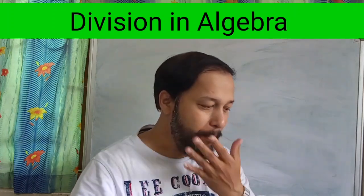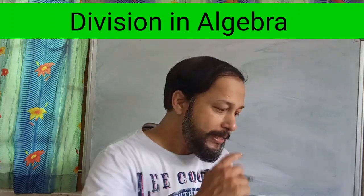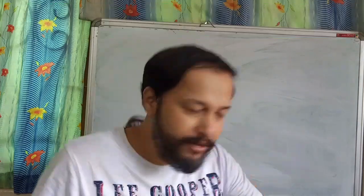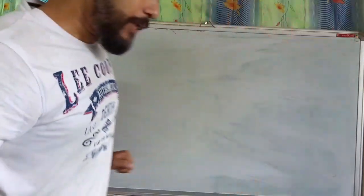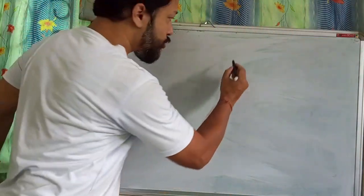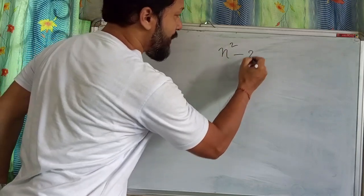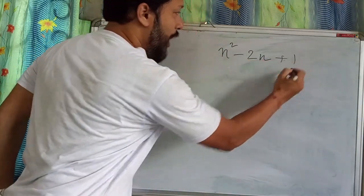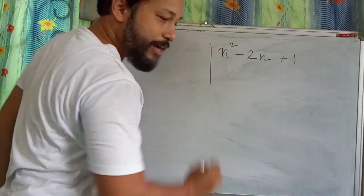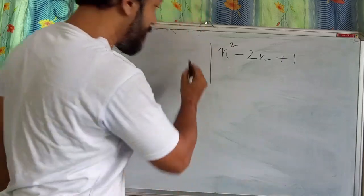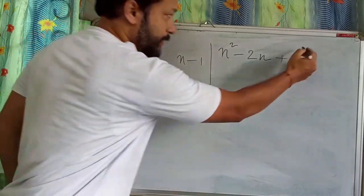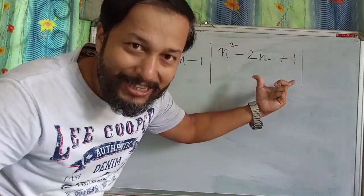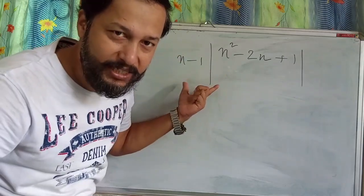First example — what I want to show you is that we have to divide n² minus 2n plus 1. This whole algebraic expression will be divided by n minus 1.